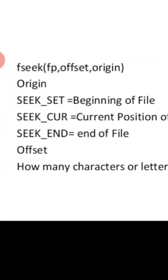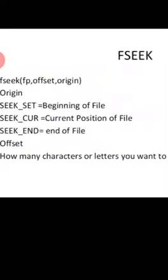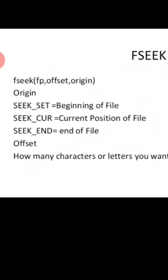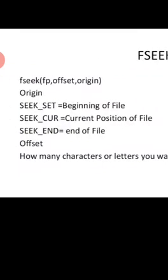Before moving to the next program, let's recall some things we discussed about fseek. fseek consists of three parameters: first is fp, which stands for the file pointer; second is offset, which defines how many characters or letters you want to skip; and third is origin, which may contain three values: beginning, current position, or end of file.